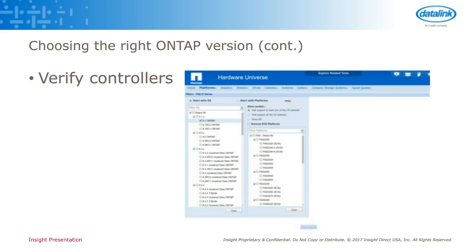Going back to verifying the controllers — NetApp has a utility called Hardware Universe. You can get to it at hwu.netapp.com, and within that Hardware Universe it'll let you pick a version of ONTAP. On the left-hand side you've got versions of ONTAP, and once you select that, the right-hand pane will give you the various controllers that they make. If you don't see your controller in that secondary list, that means it's no longer supported. This is your first step before you do anything else — make sure the hardware you have is actually going to be supported on the release you want to go to.